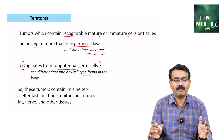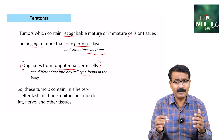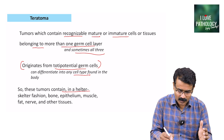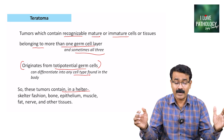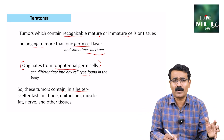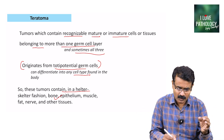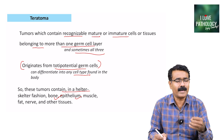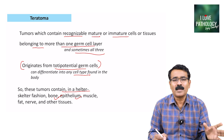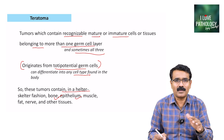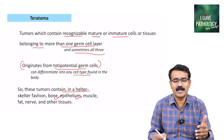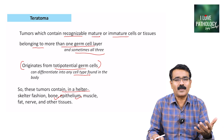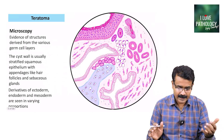By definition, in a teratoma you can see a helter-skelter fashion of all the tissues in the body — it could be bone, epithelium, muscle, fat, nerve, skin, and everything. Depending upon the derivatives of each germ cell layer, you can see components of all three germ cell layers.